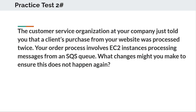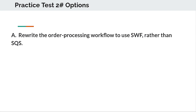Let's move to the next question. The customer service organization at your company just told you that a client's purchase from your website was processed twice. Your order process involves EC2 instances processing messages from an SQS queue. What changes might you make to ensure this does not happen again? Option A: Rewrite the order processing workflow to use SWF rather than SQS.